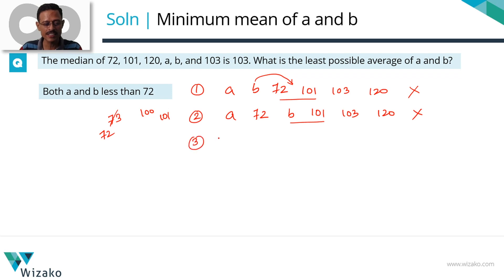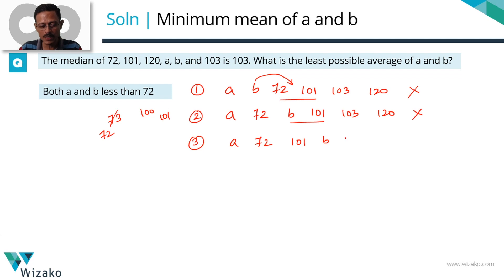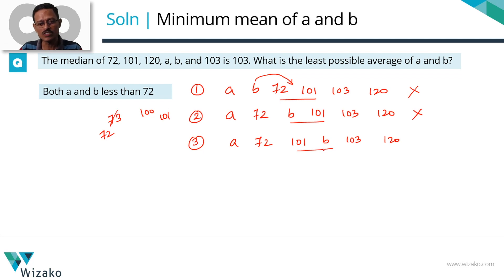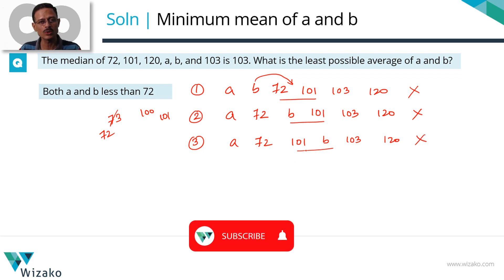Iteration 3: still keep a to the left of 72, push b one step further right — between 101 and 103. The ascending order: a, 72, 101, b, 103, 120. The middle two numbers are 101 and b. b can range from 101 to 103. Even if b equals 103, the median is (101 + 103) / 2 = 102, not 103. Iteration 3 is also ruled out.